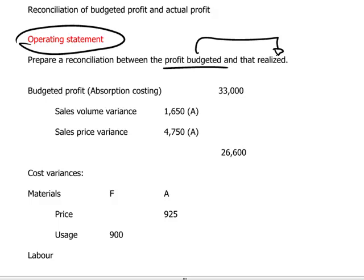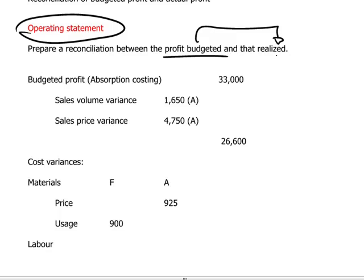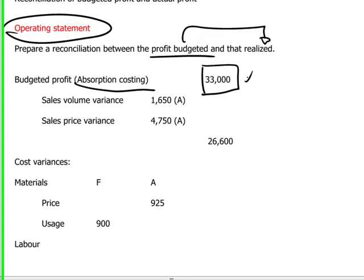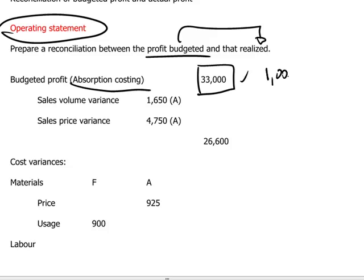If we look at the same scenario that was presented earlier in these express notes, the operating statement based on an absorption costing method would begin with the budgeted profit amount of $33,000. This $33,000 comes from 1,000 units budgeted to be sold times a standard profit of $33 per unit. That becomes our starting point, and we then add or subtract the various variances relating to sales volume, sales price, and so on.